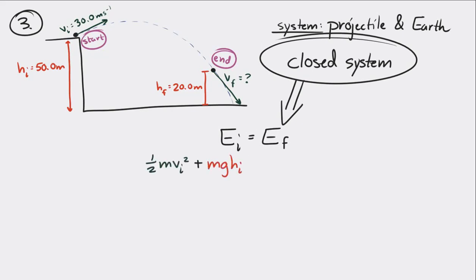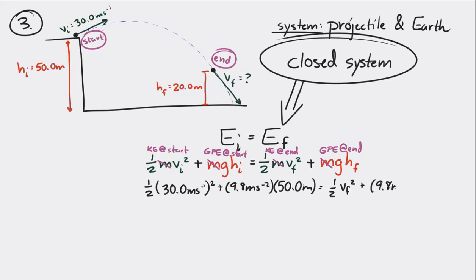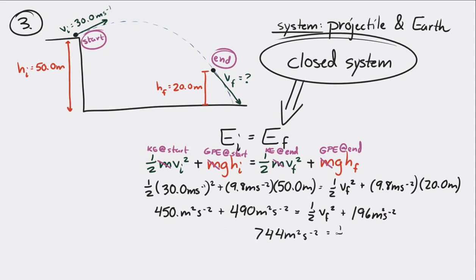At the beginning, it has kinetic energy and gravitational potential energy. And it has kinetic energy and gravitational potential energy at the end as well. There's mass in every term, so we can cancel out the mass. We put in the information we know: the initial speed, the initial height, we don't know the final speed but we do know the final height. Solving for the final speed: 38.6 meters per second.